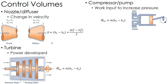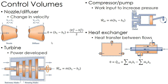The opposite of a turbine is a compressor or pump, where you're putting work into the system to get an increase in pressure. Again, we typically assume these are adiabatic, and kinetic and potential energy are much smaller compared to the change in enthalpy. So the work input is just the change in enthalpy — finding the enthalpy gives us the work into a compressor or pump.